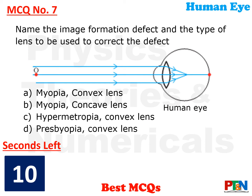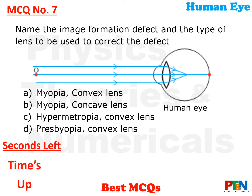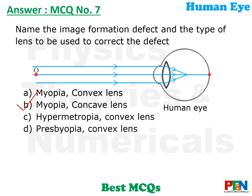Next MCQ. A picture has been given. From this picture, find out what type of defect it is and what lens is to be used to correct it. 10 seconds time. The answer is option B. The picture shown is for myopia, and to correct myopia concave lenses are used.